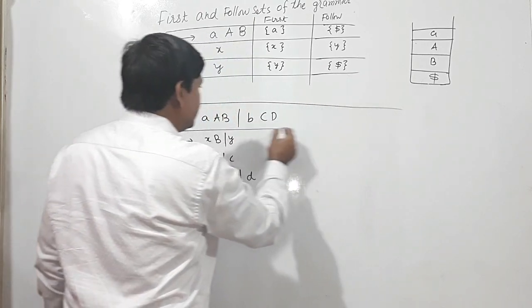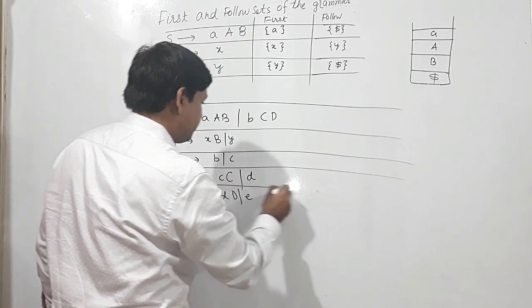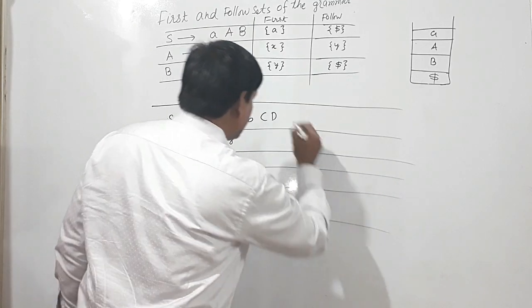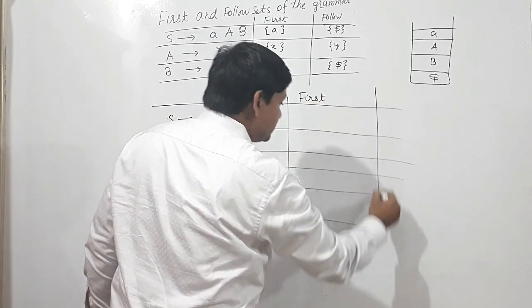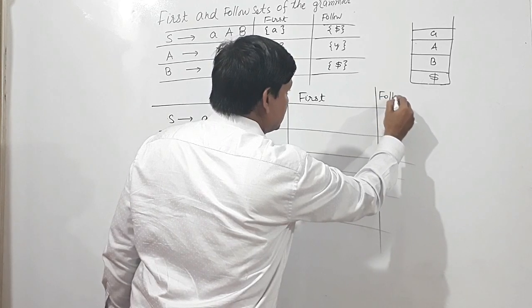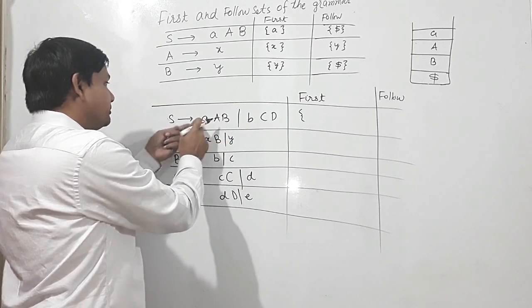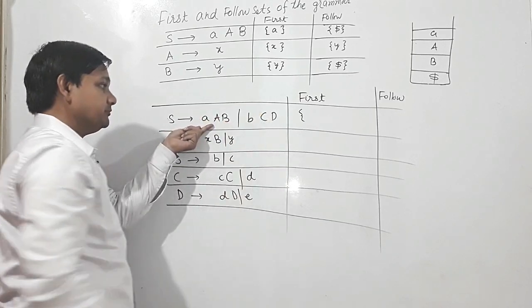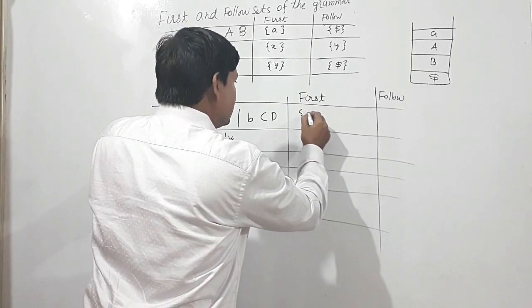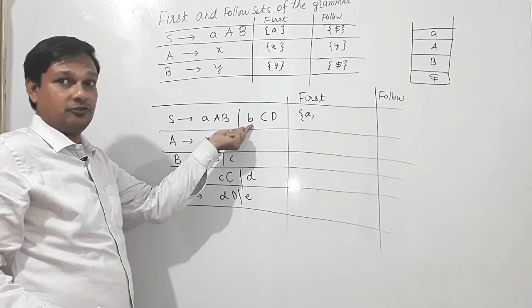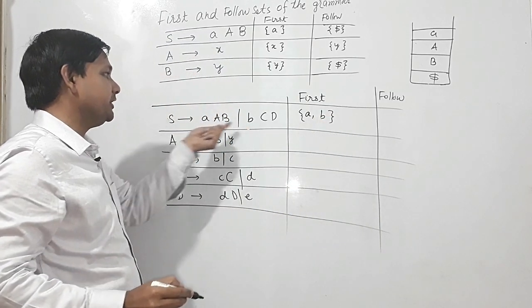We shall find the First and Follow sets of this grammar. Here we have two productions for S: S produces 'ab' or 'bcd'. First of the production S→ab is 'a', and First of S→bcd is 'b'. So First of S will be {a, b}.